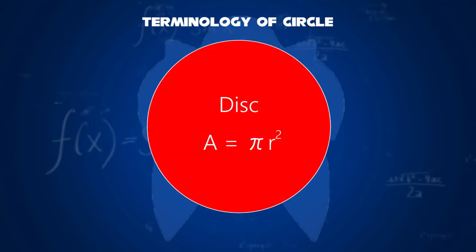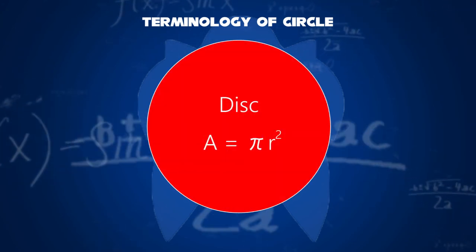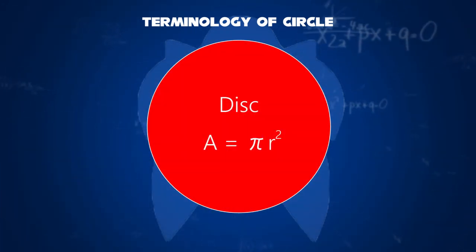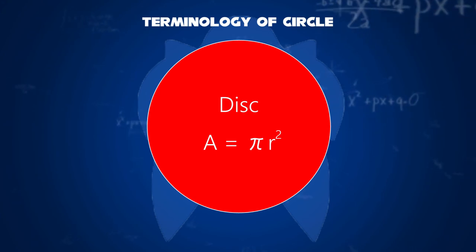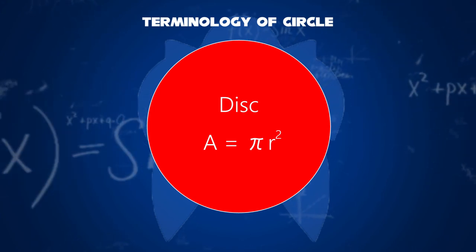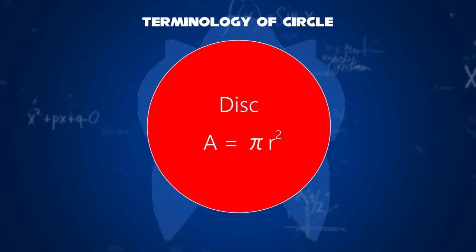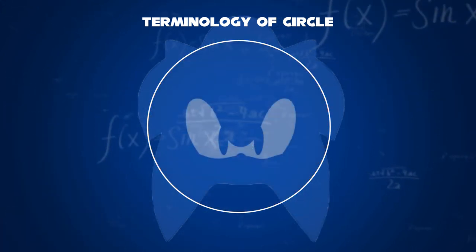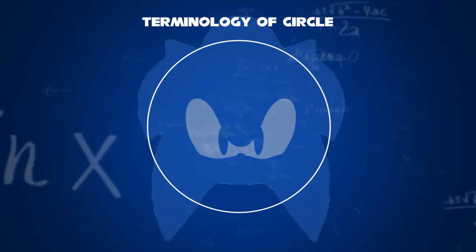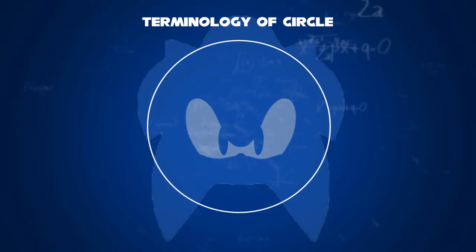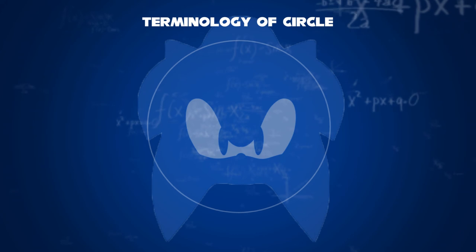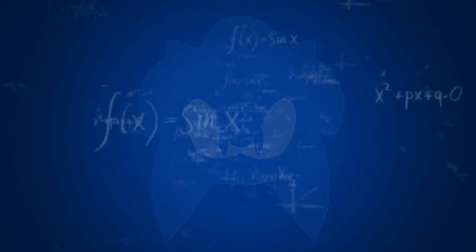And number thirteen, the whole region of the plane bounded by a circle is called a disc. The entire disc is of full area πr². So there are eight perimeter features and five area features of a circle, hence the terminology shows thirteen total features.